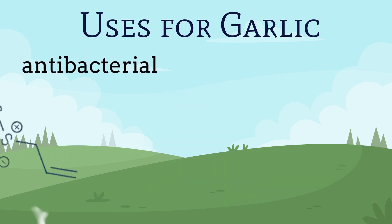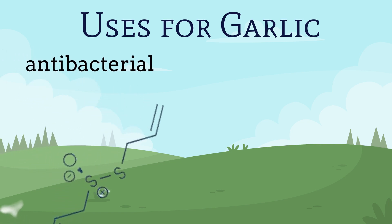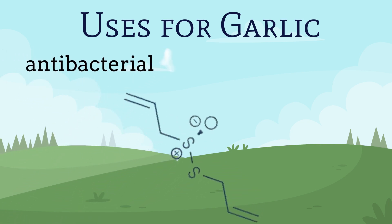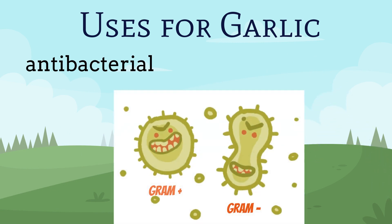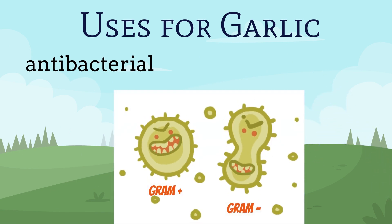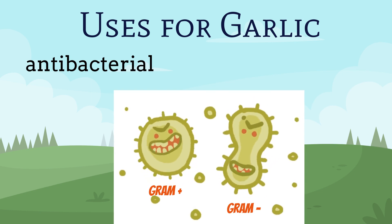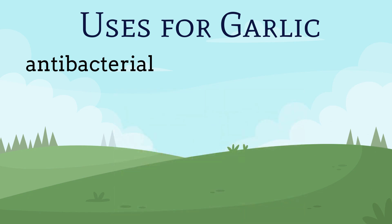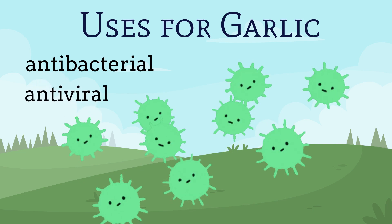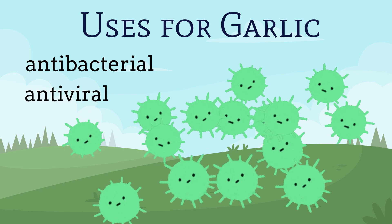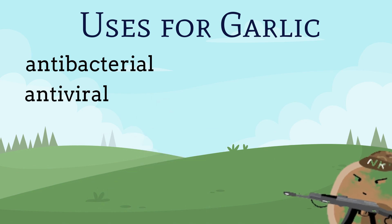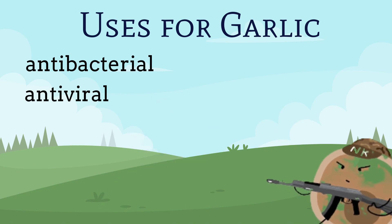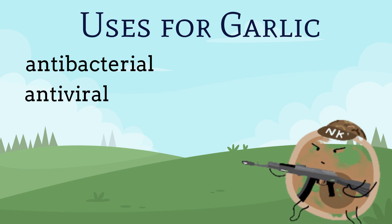Garlic's antibacterial nature is due to its constituent allicin. Allicin has the ability to kill both gram-negative and gram-positive bacteria, making garlic a powerful antibacterial agent. Garlic's antiviral properties are due to its ability to decrease viral replication and increase the body's natural killer cells, which kill virus-infected cells to help the body protect against further infection.